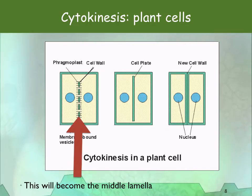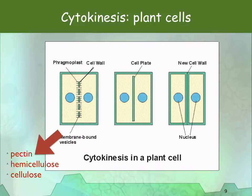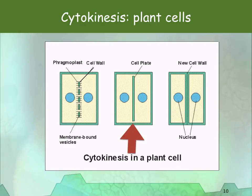The cell plate will become the middle lamella. The vesicles contain pectin, hemicellulose, and cellulose, and the vesicle membranes will become the cell surface membrane. The cell plate grows and fuses with the parent cell walls, eventually dividing into two daughter cells.